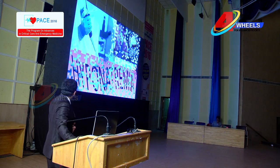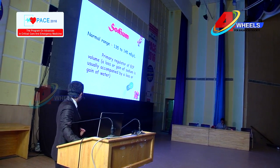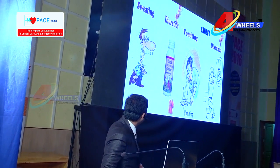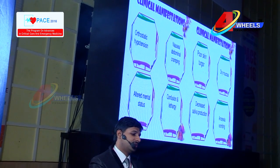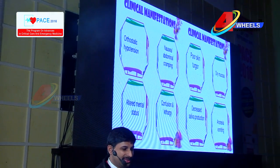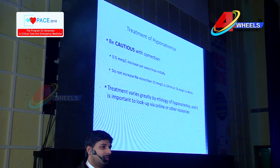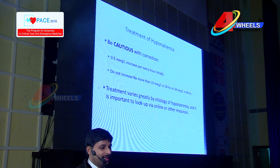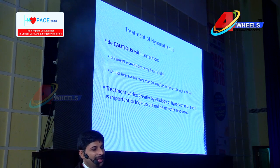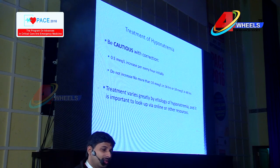Now coming to the main part — sodium. We are going to talk about hyponatremia. The normal range of sodium is 135–145 mEq/L and it is a major extracellular fluid. Symptoms include sweating and use of diuretics, and vomiting and diarrhea. Clinical manifestations include hypostatic hypotension, altered mental status, nausea, confusion, poor skin turgor, decreased saliva production, dry mucosa, and anorexia and vomiting. Be cautious in correcting — increase sodium only 0.5 mEq/L per hour initially. Do not increase sodium more than 10 mEq/L in 24 hours or 18 mEq/L in 48 hours, because rapid correction is fatal and can cause edematous conditions. Treatment varies greatly by etiology.